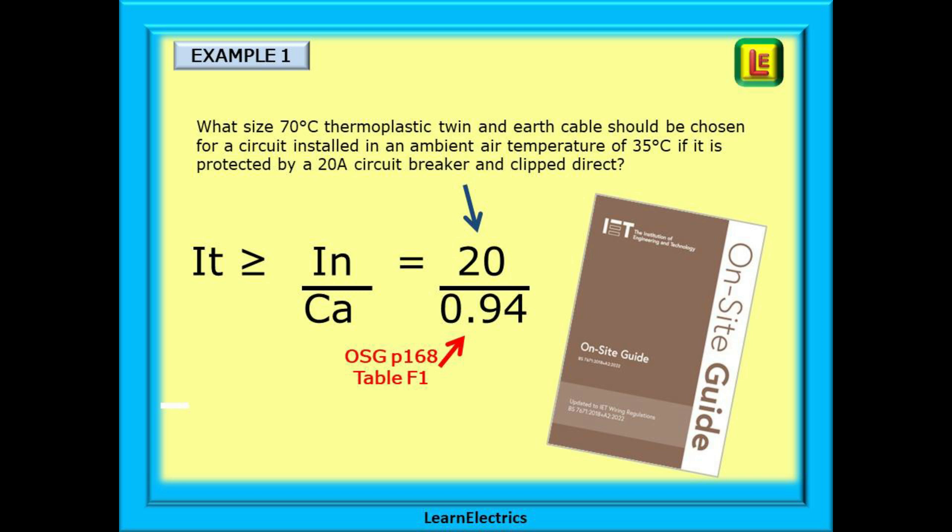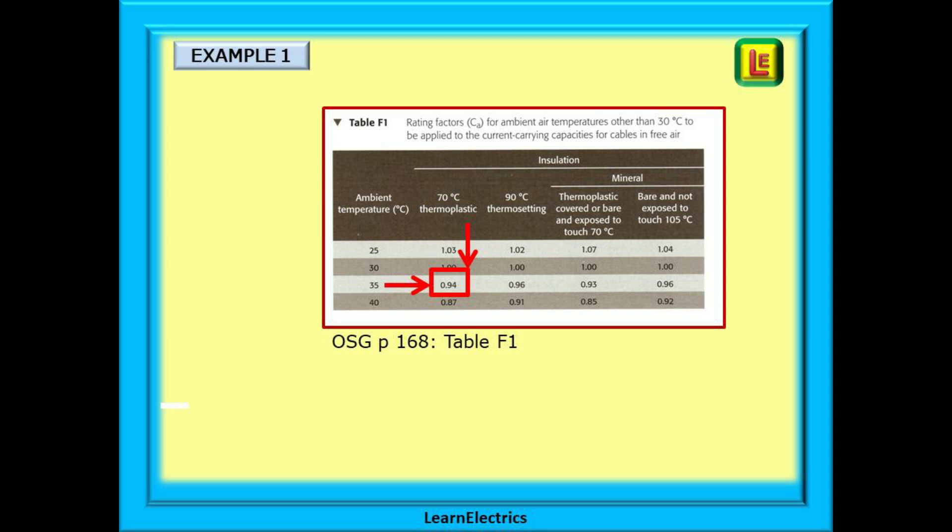So our question and our original formula have been simplified to this. Looking on page 168 of the on-site guide, we will find table F1 that tells us to use a value of 0.94. How have we got this? Find a 70 degree thermoplastic in table F1 as shown here, and follow this down to the row for 35 degrees air temperature, where the two cross is our factor 0.94. Easy.